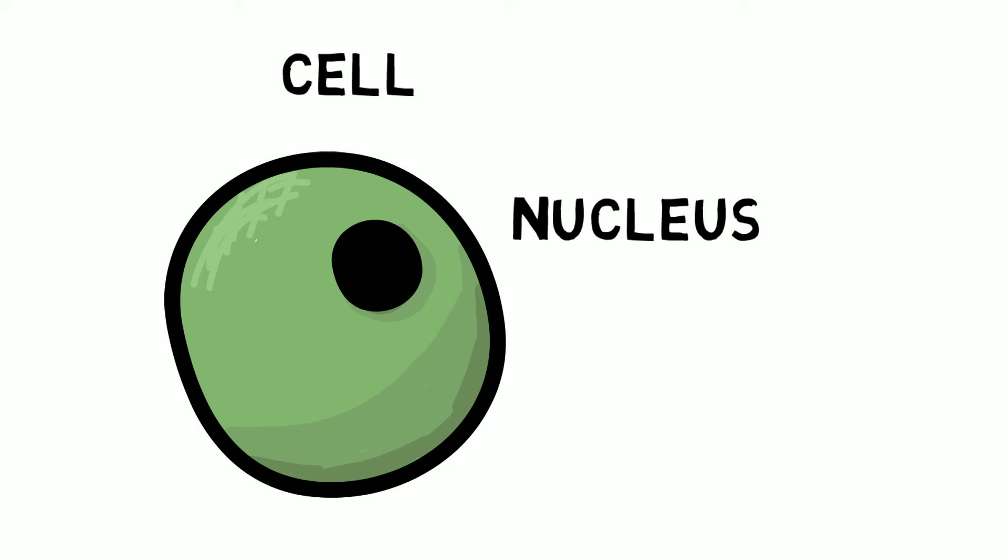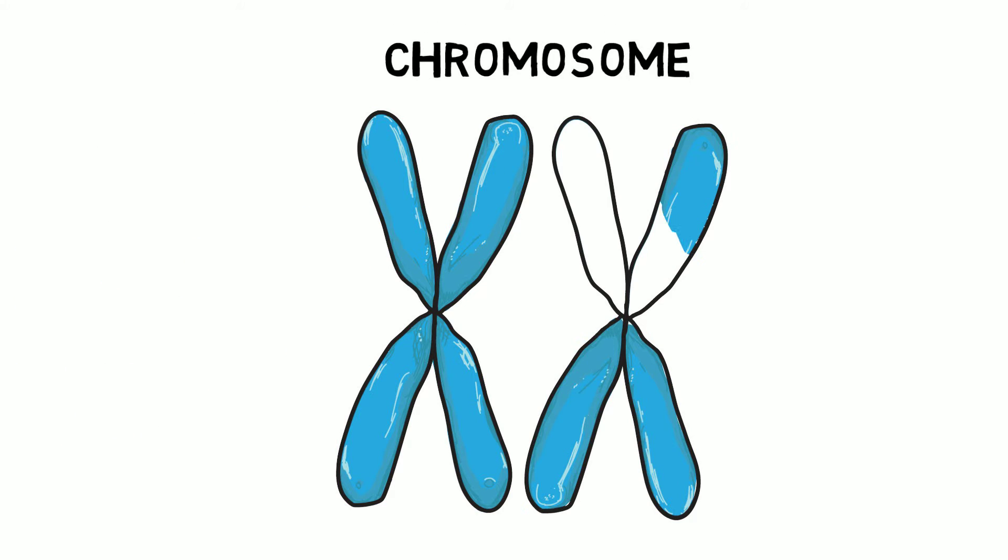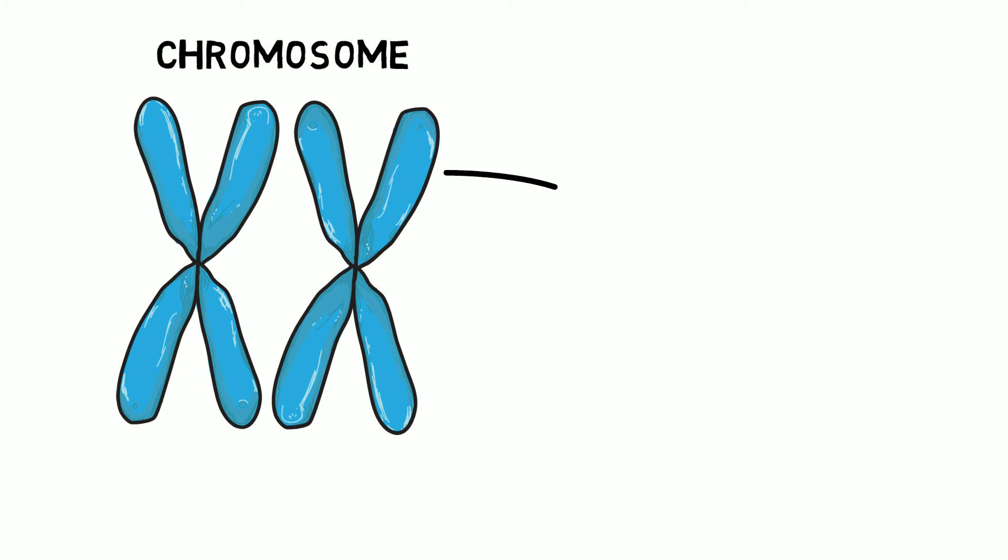Scientists then look closely at a part of the cell called the nucleus which is where most of your DNA is stored. DNA is stored in tightly coiled strands called chromosomes. In genetic testing the chromosomes are unwound and the message of the DNA is read as a series of letters.